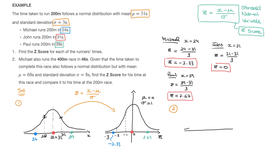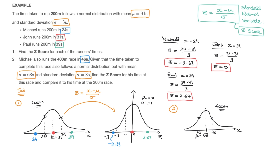Drawing a generic bell curve with an x-axis, the mean for this distribution is 68 seconds, and the standard deviation is 8 seconds. So the two points of inflection are at 60 and 76 on the x-axis. We were told Michael runs this 400 meter race in 46 seconds, so 46 would be somewhere to the left on the x-axis.